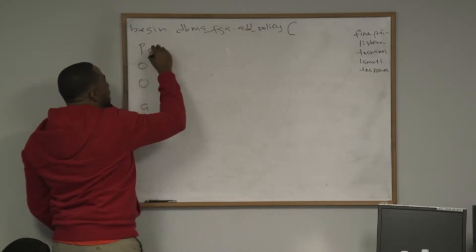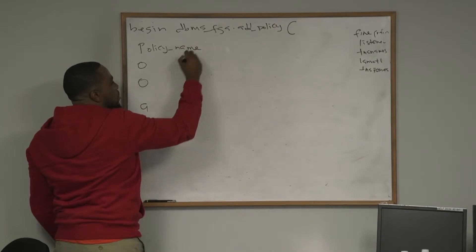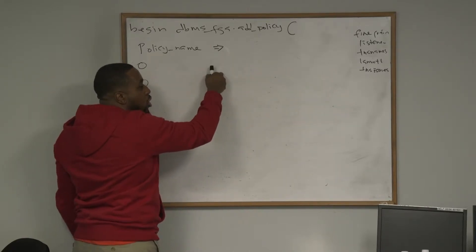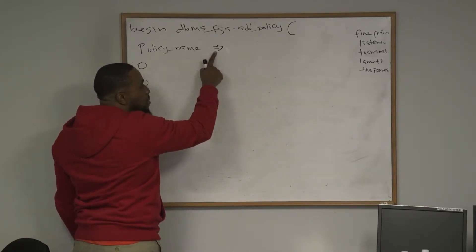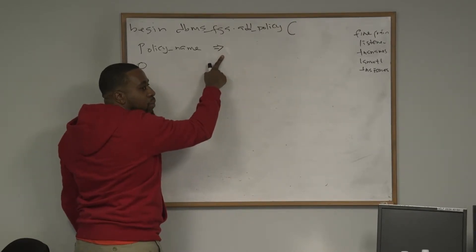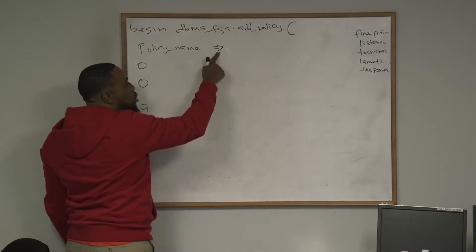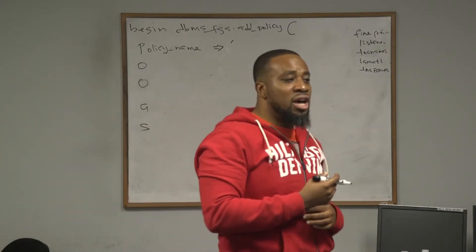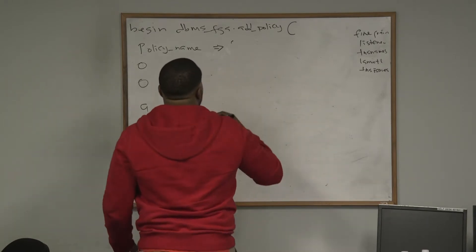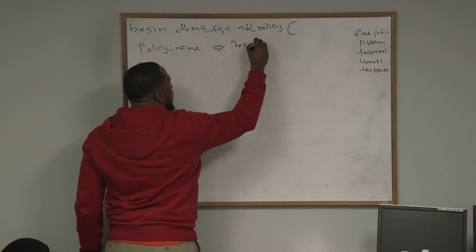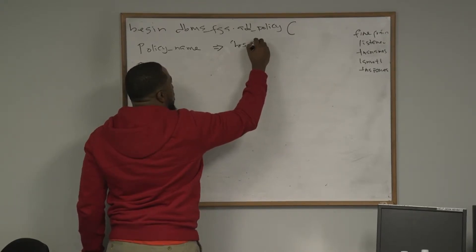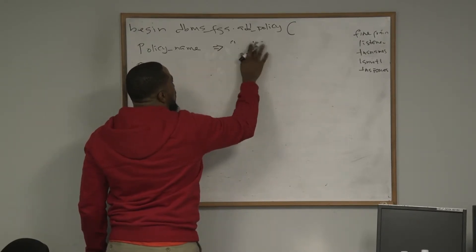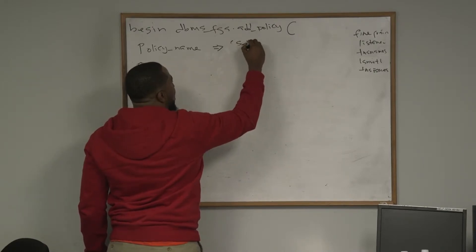Policy name: POLICY underscore NAME. Equals-to-greater-than sign — put a space after 'name', but no space between the equal and greater-than sign. Then in quotes, you can call this anything you want. Let's call it SAL underscore HR. You must always put the policy name first — it goes from highest to lowest.